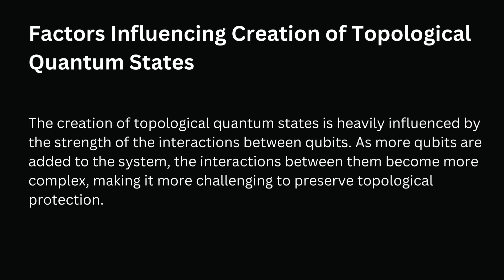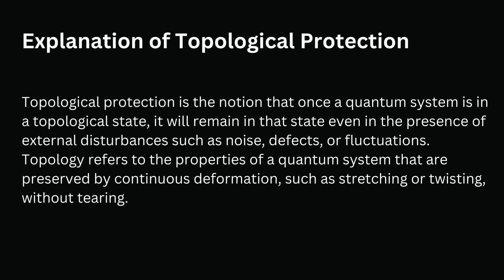Topological protection is the notion that once a quantum system is in a topological state, it will remain in that state even in the presence of external disturbances such as noise, defects, or fluctuations. Topology refers to the properties of a quantum system that are preserved by continuous deformation, such as stretching or twisting, without tearing.